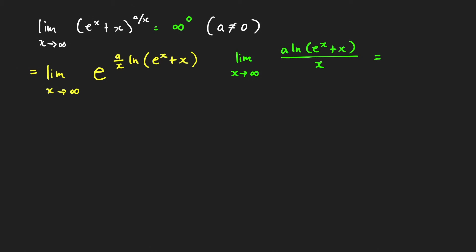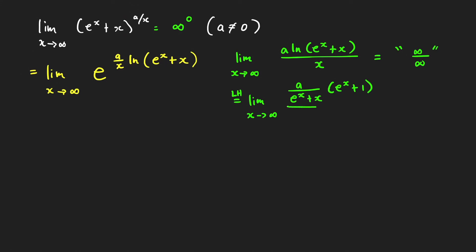The form of this limit is infinity over infinity, since a is nonzero and ln of (e to the x plus x) goes to infinity. So we apply L'Hôpital's rule. The derivative of the numerator is a over (e raised to x plus x) times the derivative of (e raised to x plus x), which is e raised to x plus 1. Simplifying, we get the limit as x approaches infinity of a times (e raised to x plus 1) all over (e raised to x plus x).